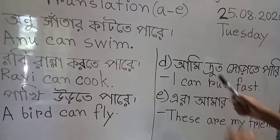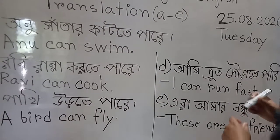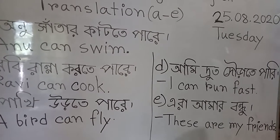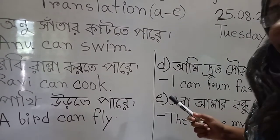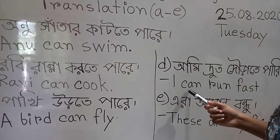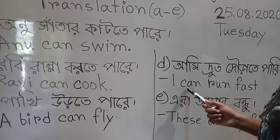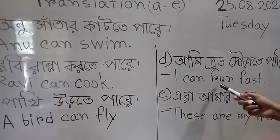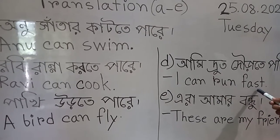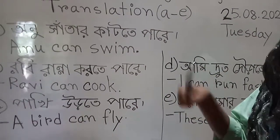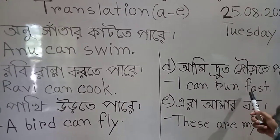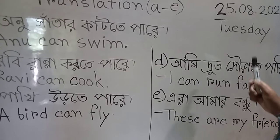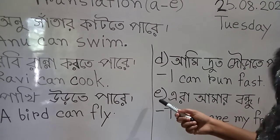Ami druto dourrate pare. Sorry, there is a spelling mistake. What will be the sentence in English? I — means ami. C-A-N — can, means 'para'. R-U-N — run, means 'dorano'. F-A-S-T — fast, means 'druto'. So the sentence is: I can run fast.